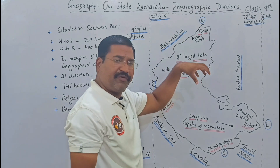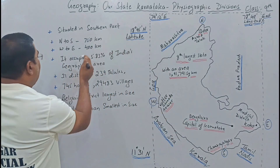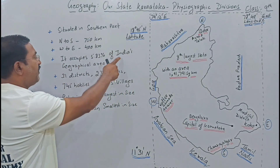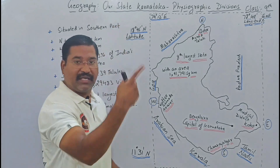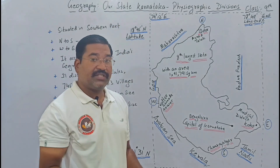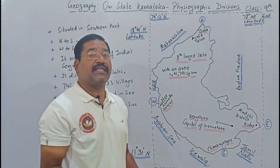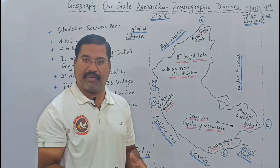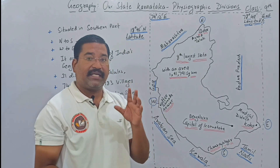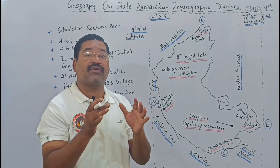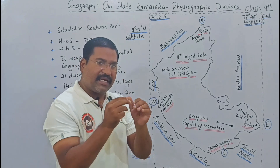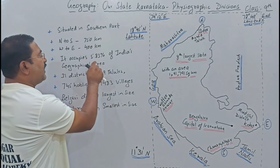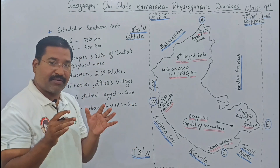Karnataka occupies 5.83 percent of India's total geographical area. India's total geographical area is 32,87,263 square kilometers, and Karnataka accounts for 5.83 percent of that.